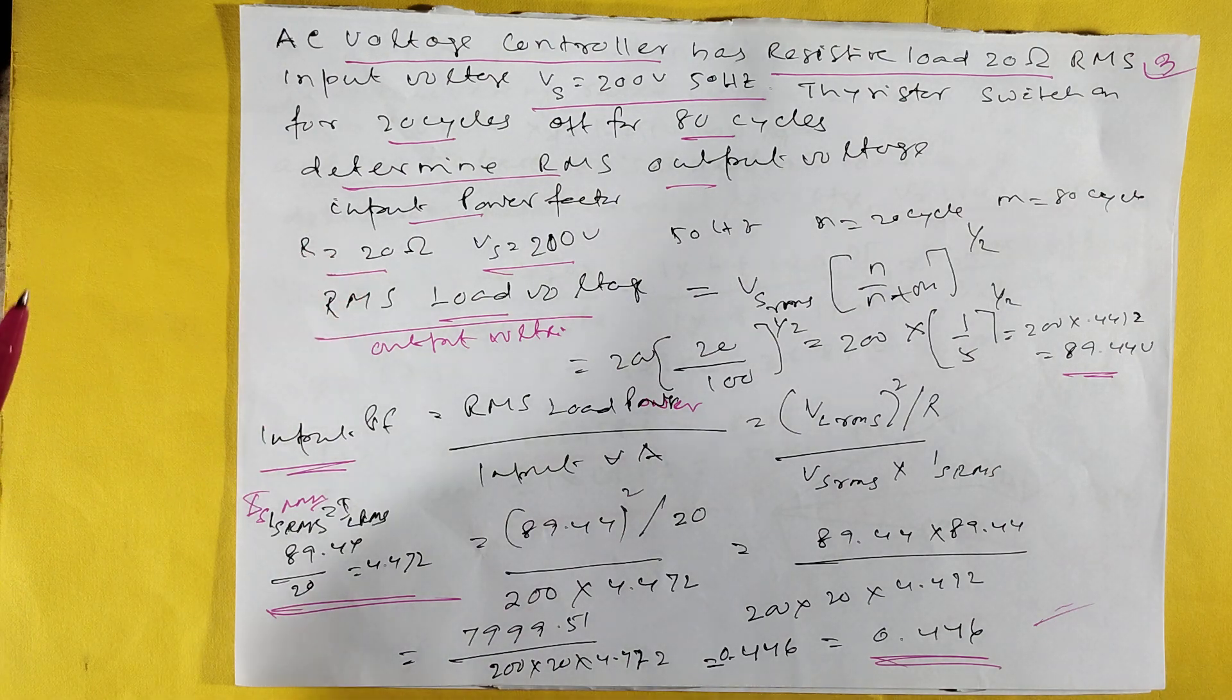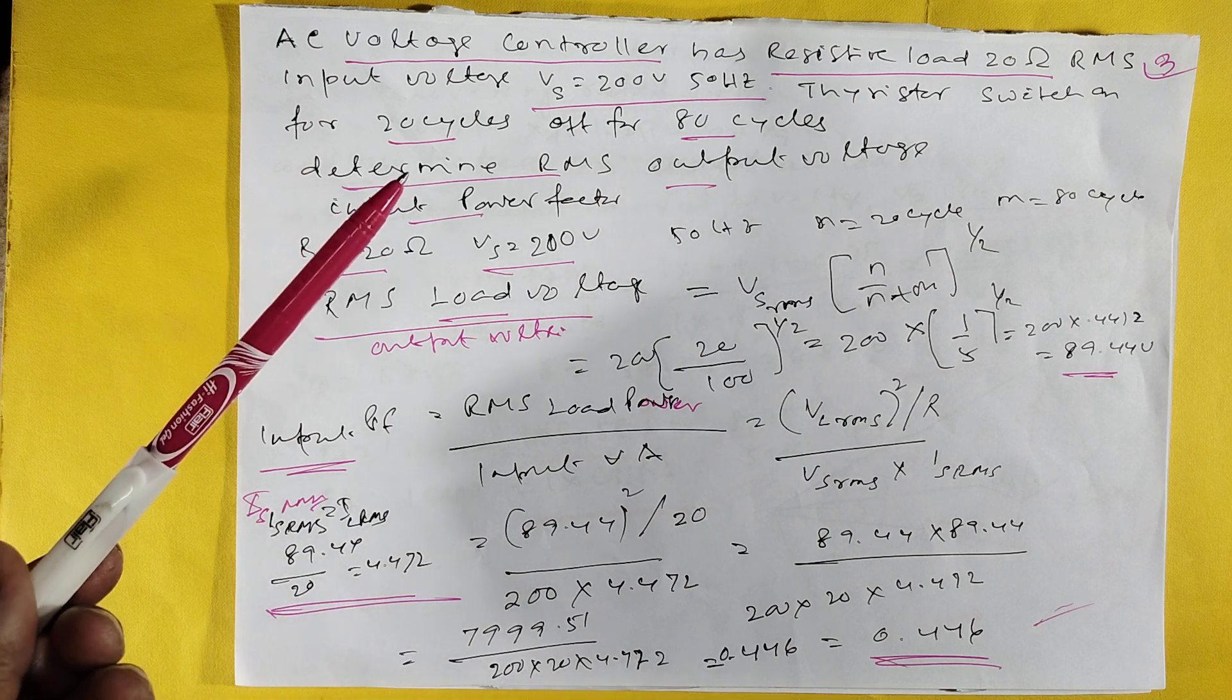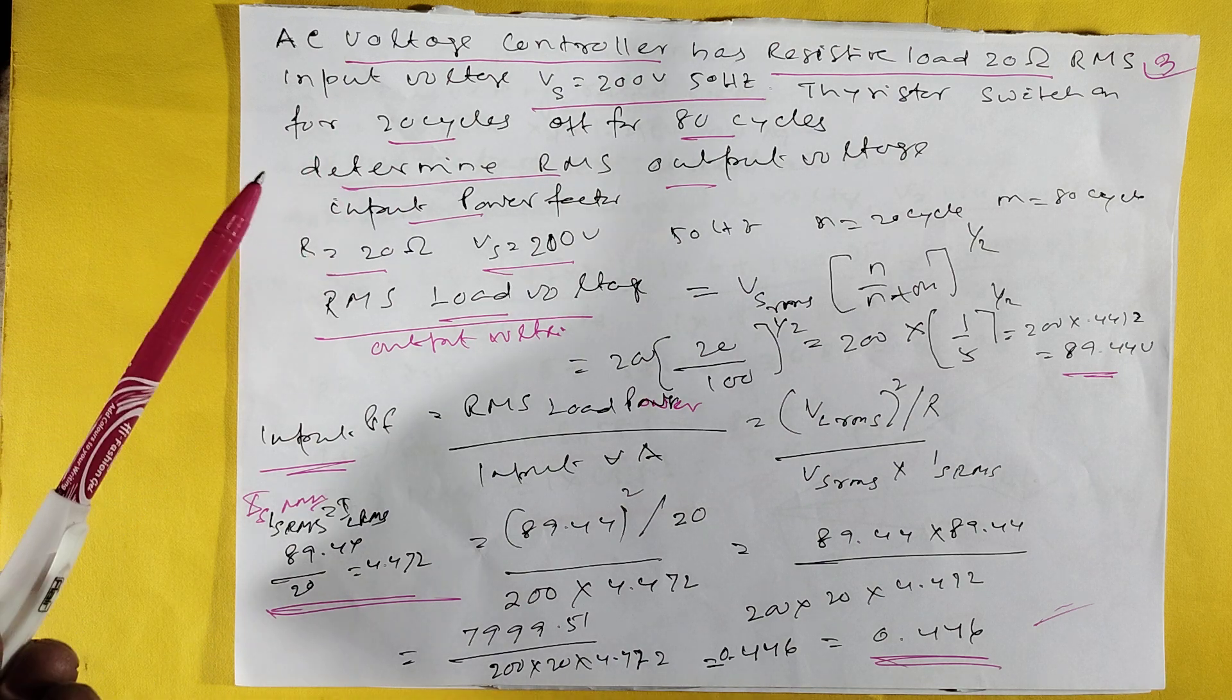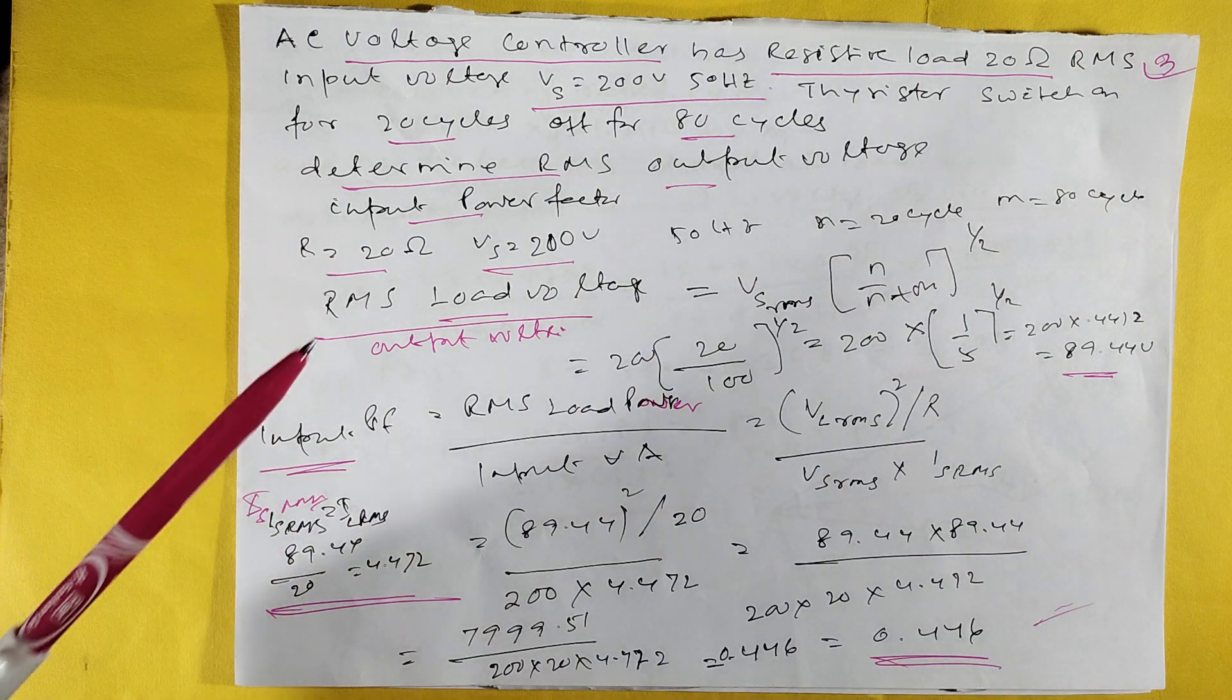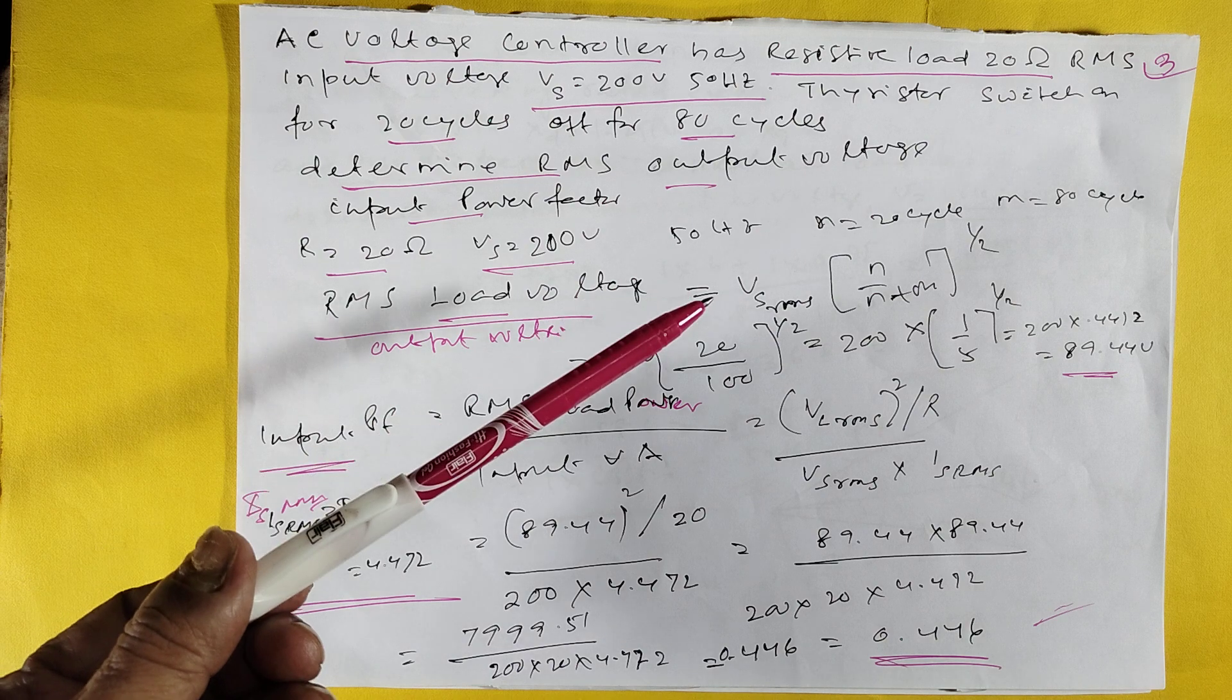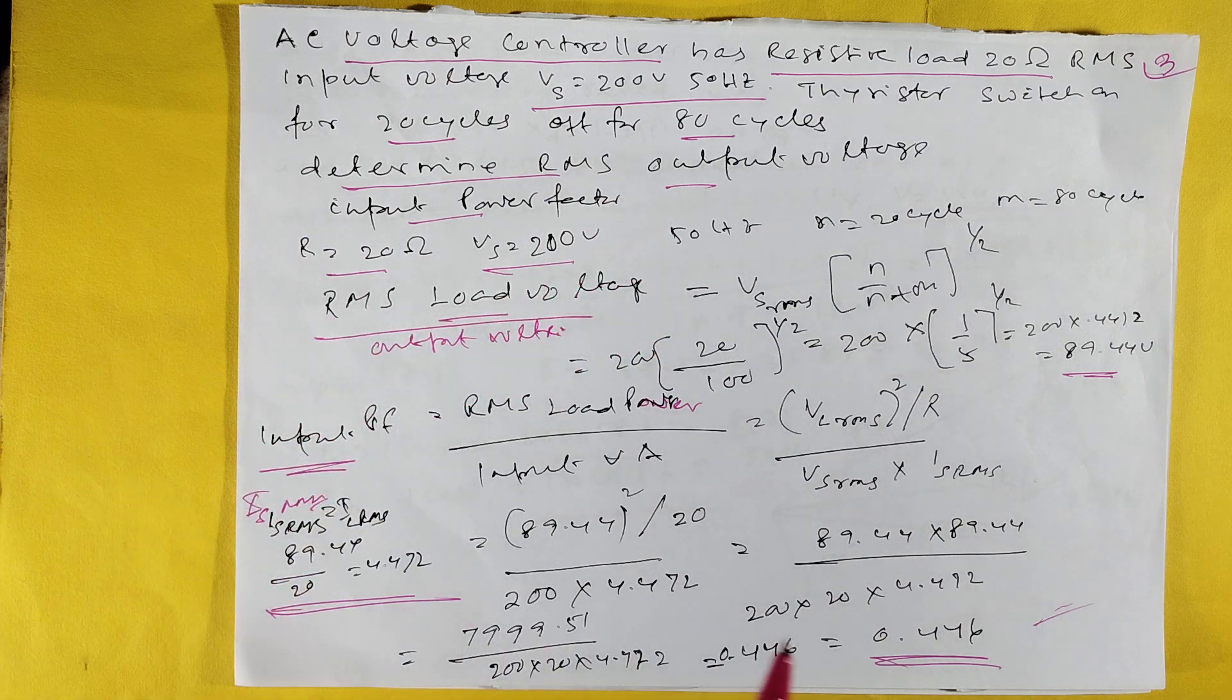Voltage controller has resistive load of 20 ohms, input voltage VS = 200V RMS. Determine the RMS output voltage. Output voltage VO = 0.35 × VS. Frequency 50 Hz. Duty cycle = N/(N+M). Output voltage calculation with RMS voltage and current values.